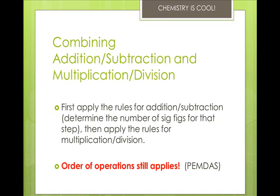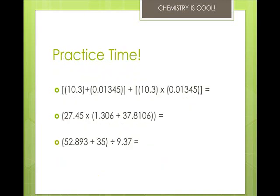When you combine addition and subtraction and multiplication and division, you first apply the rules for adding and subtracting and then apply the rules for multiplying and dividing. The order of operations still applies though: parentheses, exponents, multiplication, division, addition and subtraction, or PEMDAS. We have 10.3 plus 0.01345 quantity plus 10.3 times 0.01345 quantity, and we end up with a total answer of 10.5. I want you to try out number 2 and number 3.